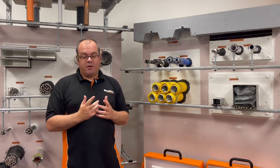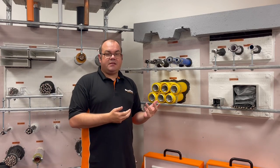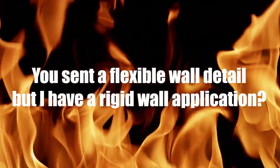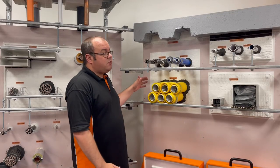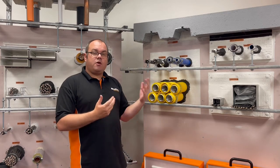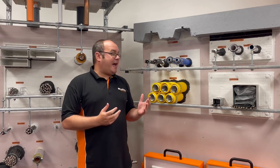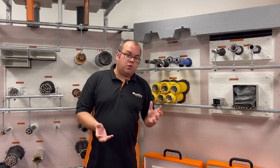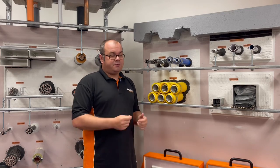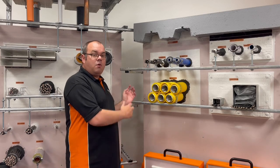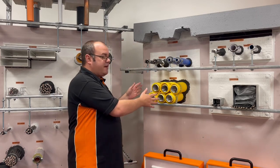The very first question I wanted to look at is one that we're often sent: you've sent a flexible wall detail but I've got a rigid wall. The reason why we do this is typically we will always test on a plasterboard wall system. The reason why we can do this is the scope of application in BSEN 1366 part 3 field of application allows test evidence from flexible walls to be used on rigid walls that are the same thickness. So there's no reason why we would test all of these solutions on both a plasterboard wall and a rigid wall, because this evidence covers that.